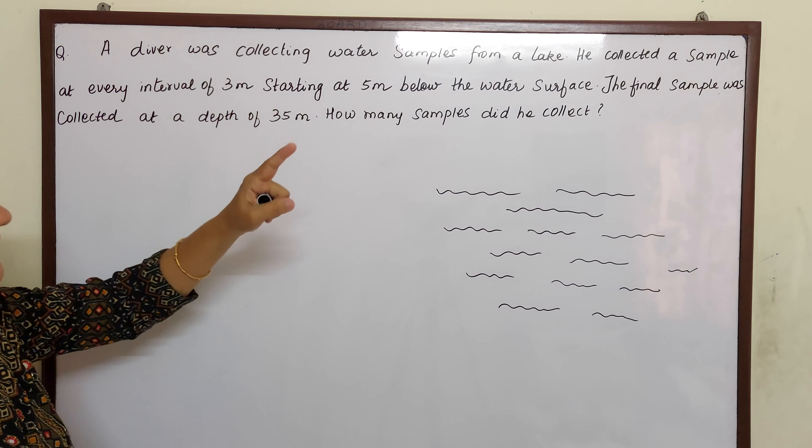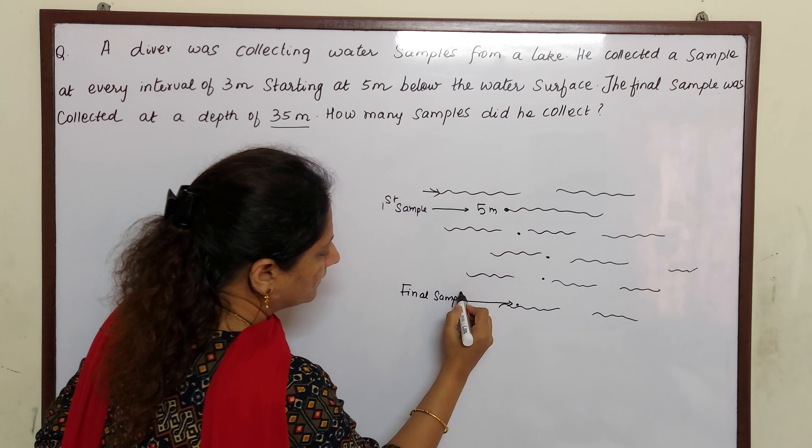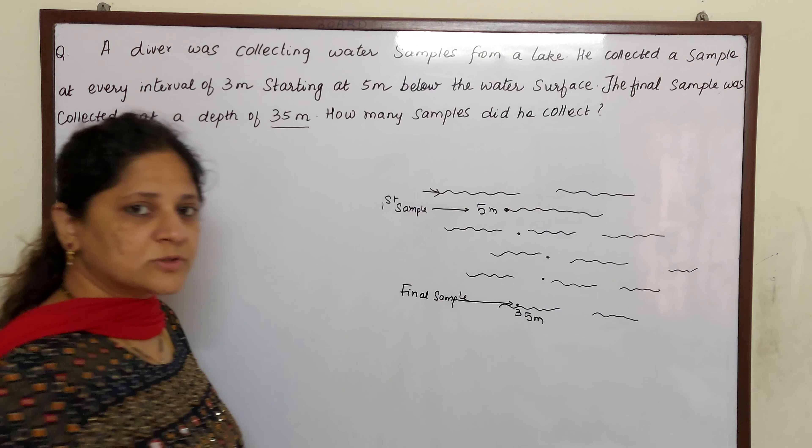This is the ground level, children. This is above ground level and this is below ground level. They are telling he collected his first sample at 5 meters below the water surface. So let us assume this is 5 meters below the water — here was his first sample collected. Then after every interval of 3 meters he collected one sample, and so on till his final sample was collected at a depth of 35 meters.